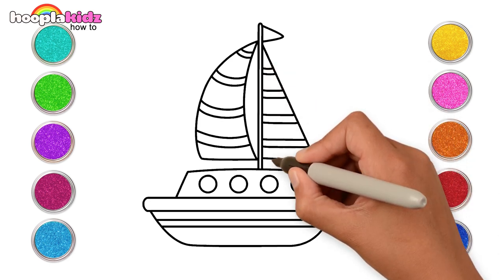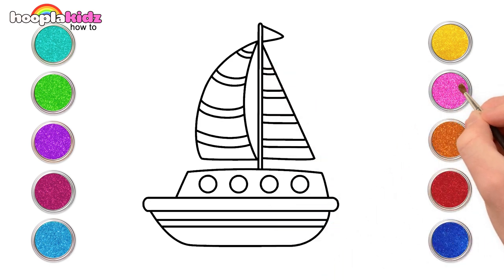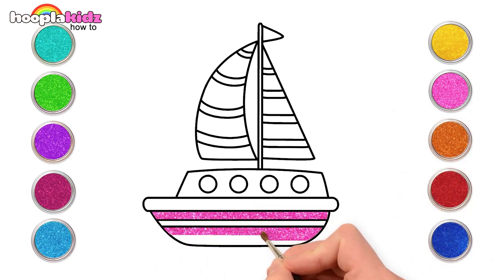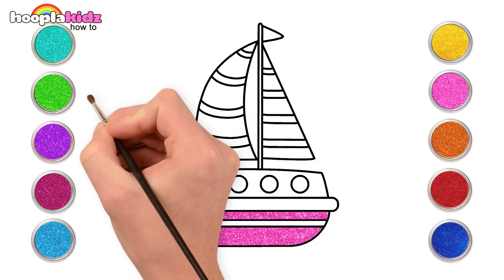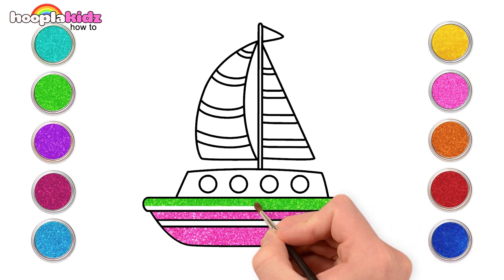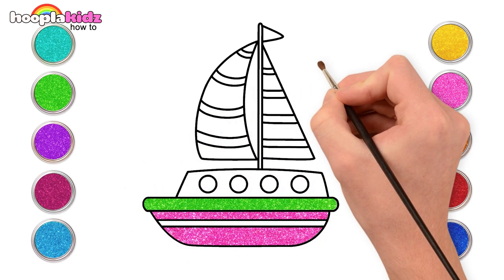Our drawing is ready! Now let's paint it in. Wouldn't it be awesome to use pink and green for the bottom of our sailboat? Now let's use some yellow!